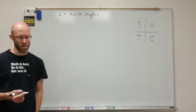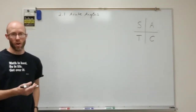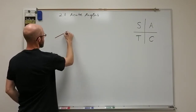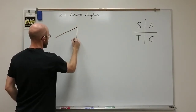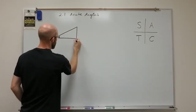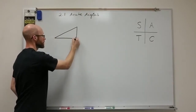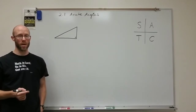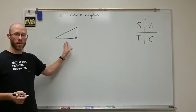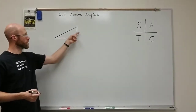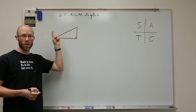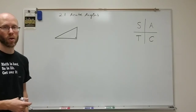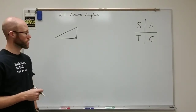Acute triangles are nice because all three angles are acute. I also want to point out the Pythagorean theorem one more time: in any right triangle, the sum of the squares of the two legs equals the square of the hypotenuse. We're going to utilize that quite a bit in this section.